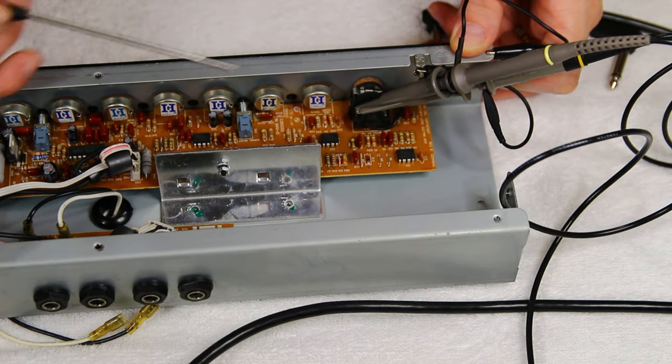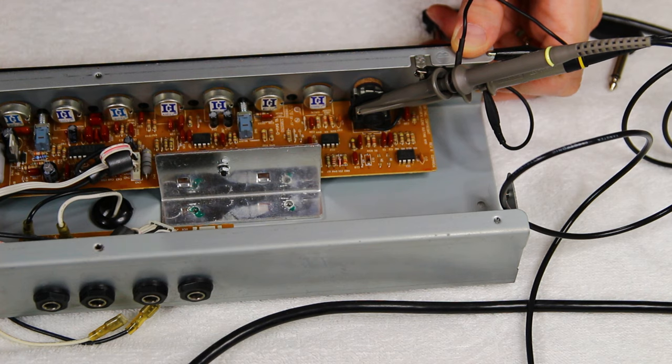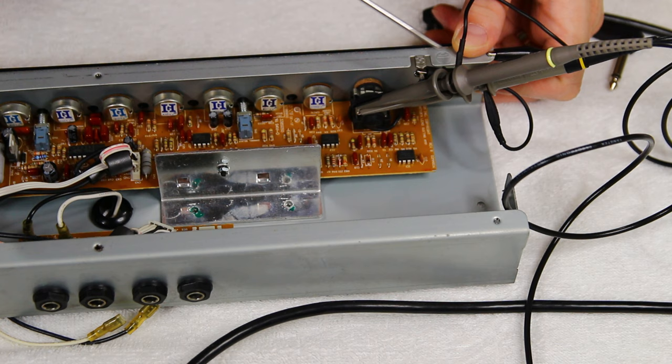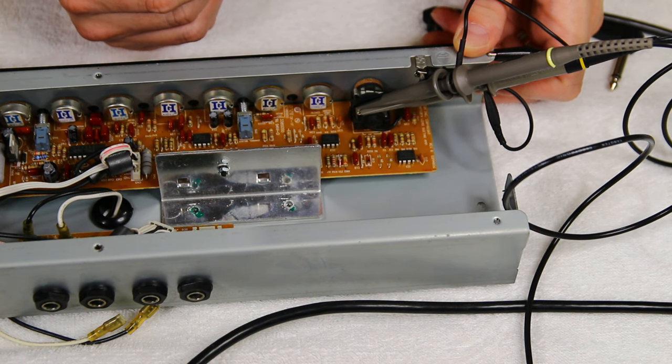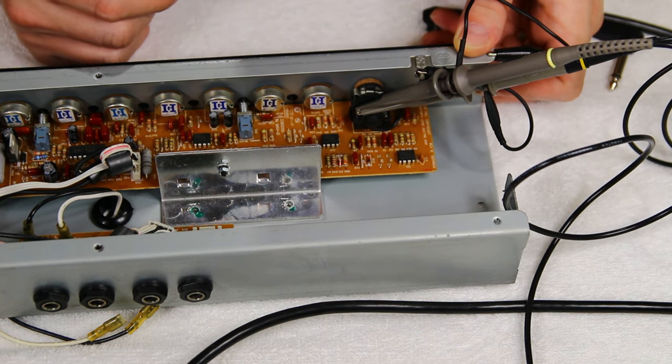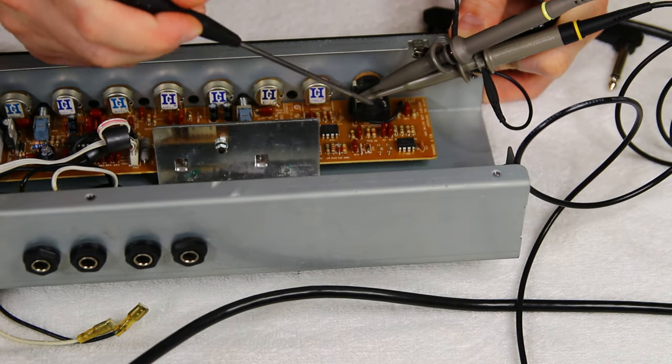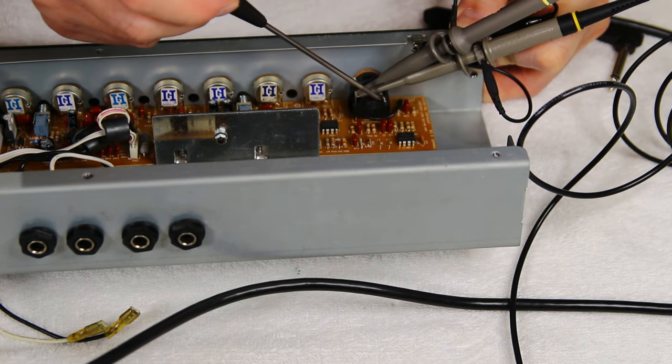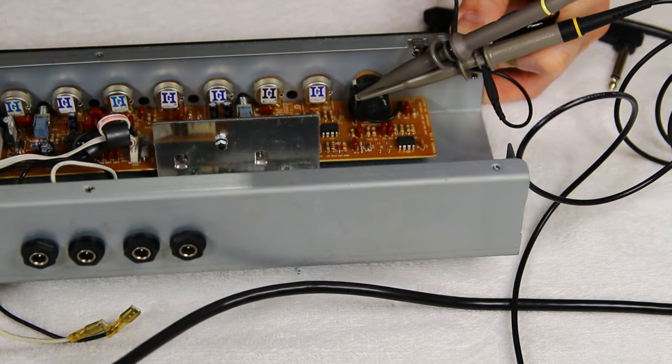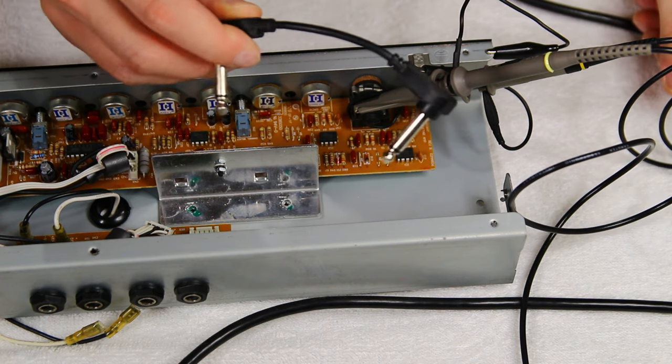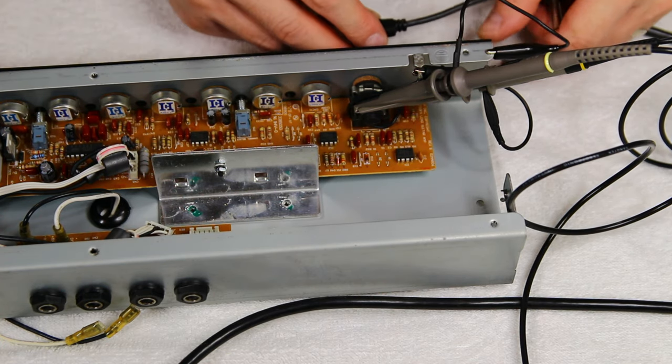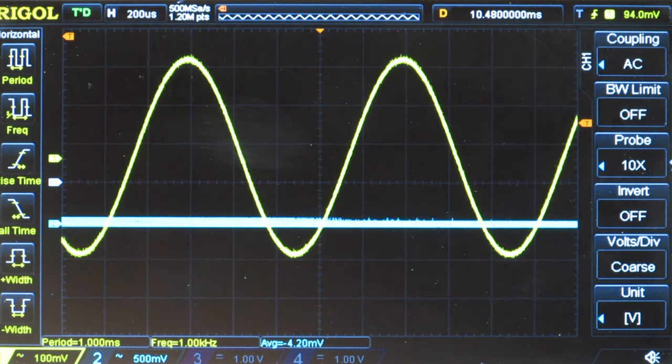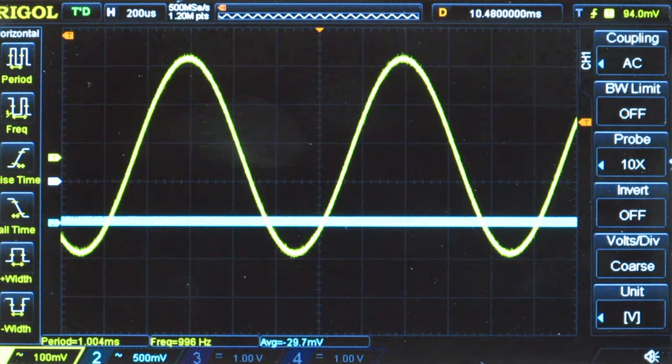All right, let's do this. So I connected the function generator up to the input. And then connected channel one of the oscilloscope. And I got nothing, as you can see. And then I remembered, oh yeah, these types of input jacks, they short to ground when nothing's connected. So I got a little jumper for pedals. Let's stick it in there. And hey, look at that. Now I got a signal. Fantastic.